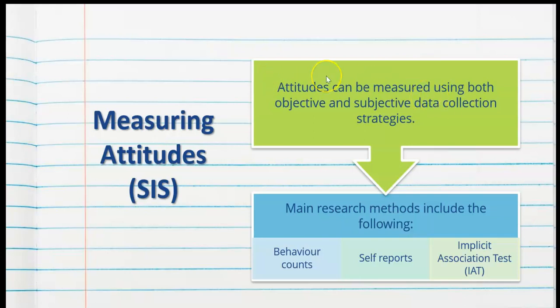Measuring attitudes relates to the science inquiry skills of psychology. Attitudes can be measured using both objective and subjective data collection strategies. The main research methods include behavior counts, self-reports, and implicit association tests or IATs.